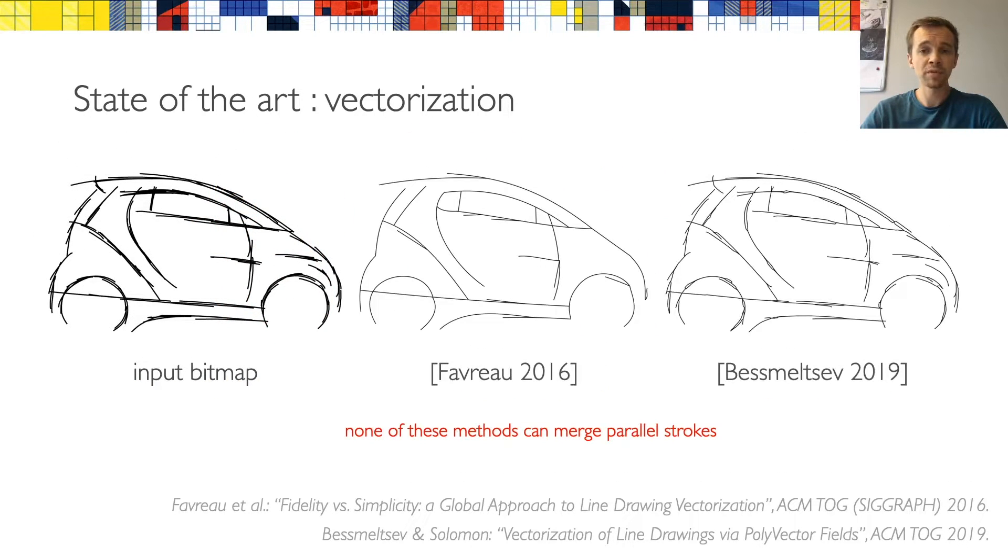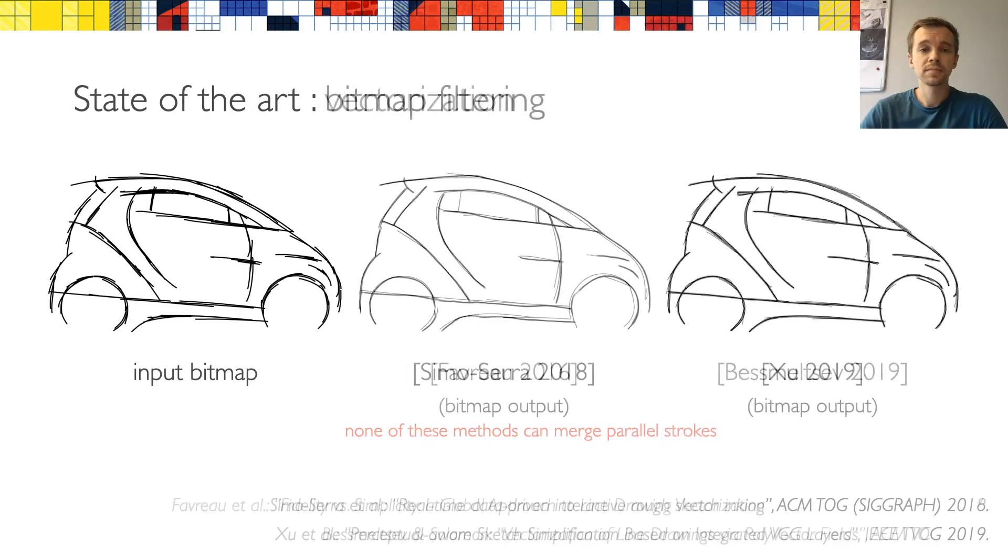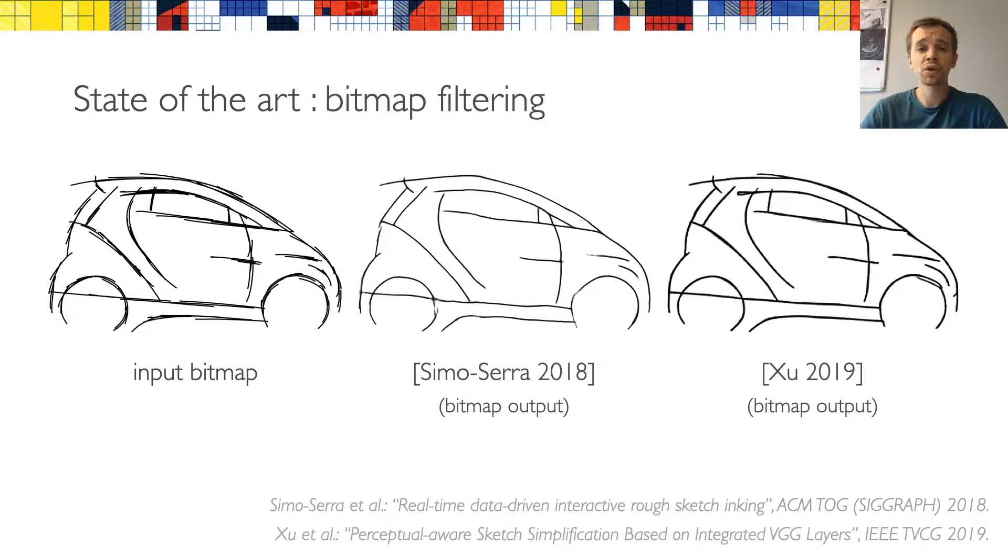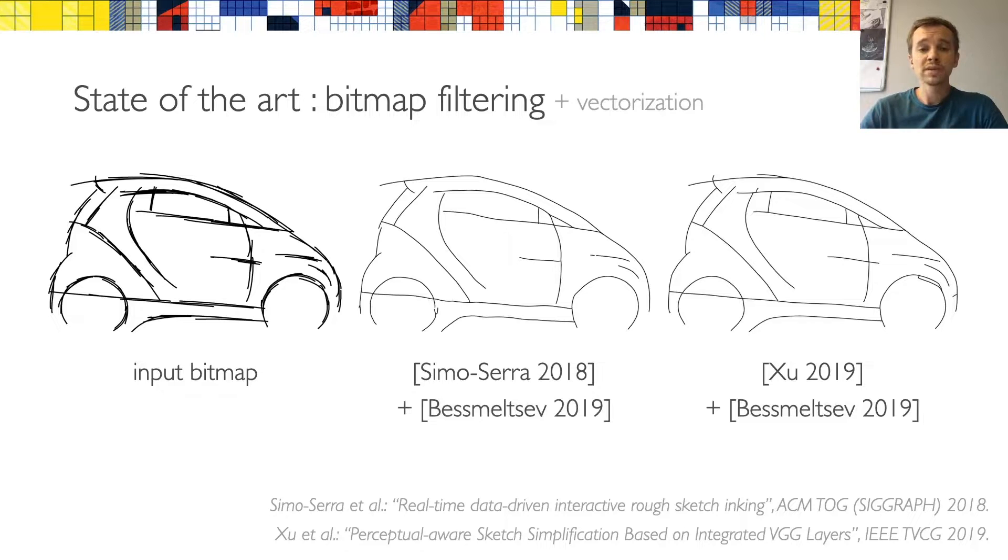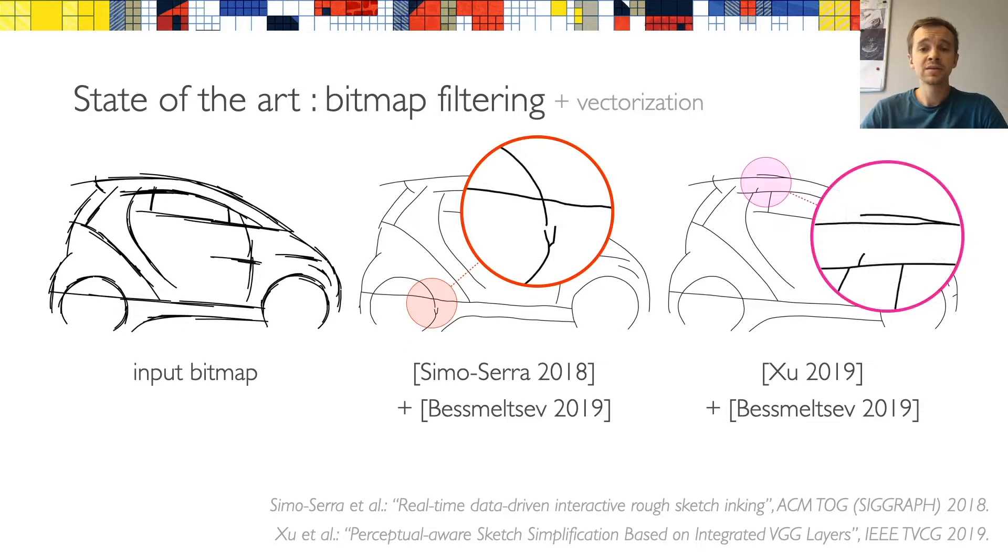Here is a concrete example of a rough input and you can notice that the existing methods fail to produce the intended topology. One might hope that a possible remedy for this problem would be to pre-process the input drawing, for instance using a deep network, and then feed the simplified bitmap to a vectorization method. The problem is that the existing simplification methods often either break the intended topology or fail to merge some of the strokes. These kinds of artifacts then usually carry over to the vectorization.